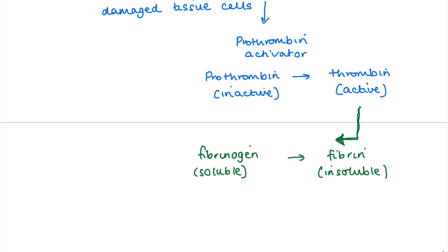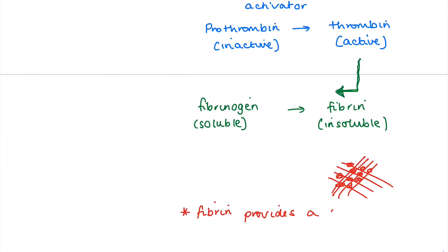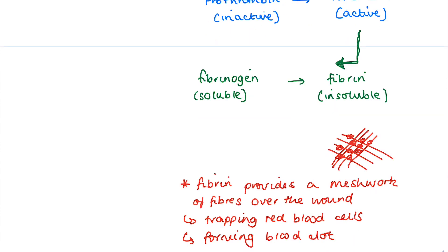This fibrin is of utmost importance because it creates a meshwork over the site of the wound, and as you can see, by doing that it will trap red blood cells within this meshwork, meaning that a clot can soon form. So to reiterate, fibrin provides a meshwork of fibers over the wound, trapping red blood cells and therefore forming the blood clot. Then obviously if that occurs on your skin, the air soon dries the clot and you'll end up with a scab — which remember you mustn't pick off, because otherwise it will start bleeding all over again.